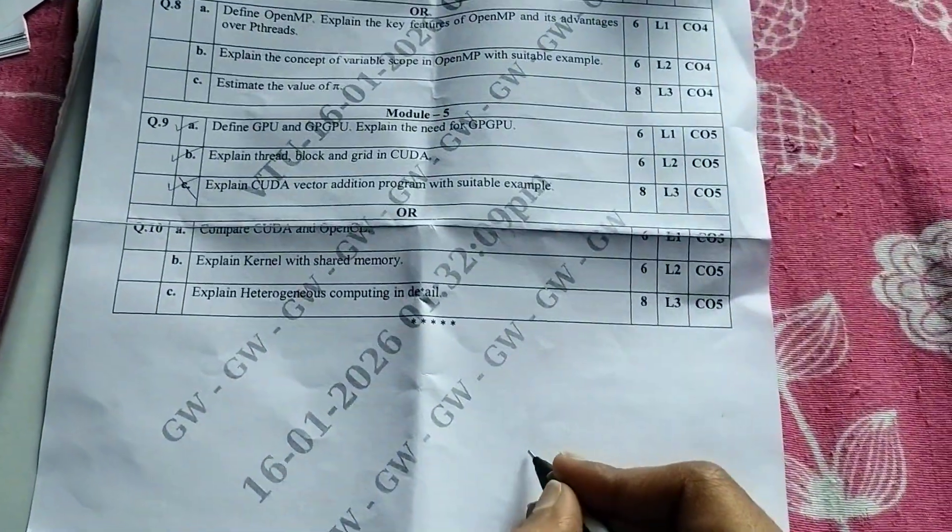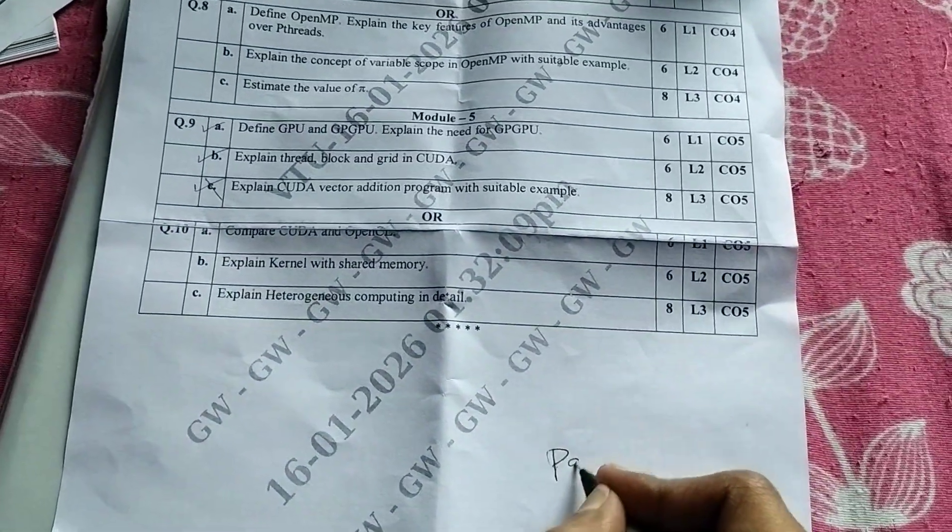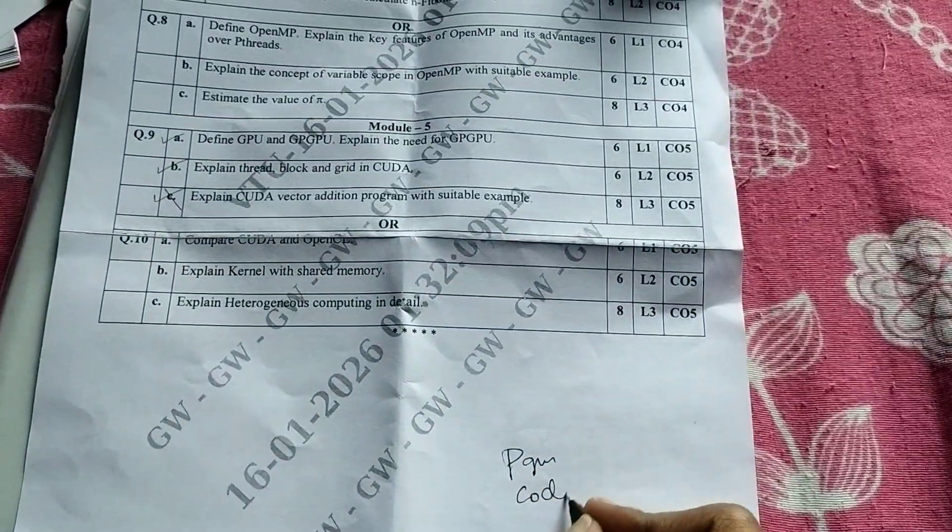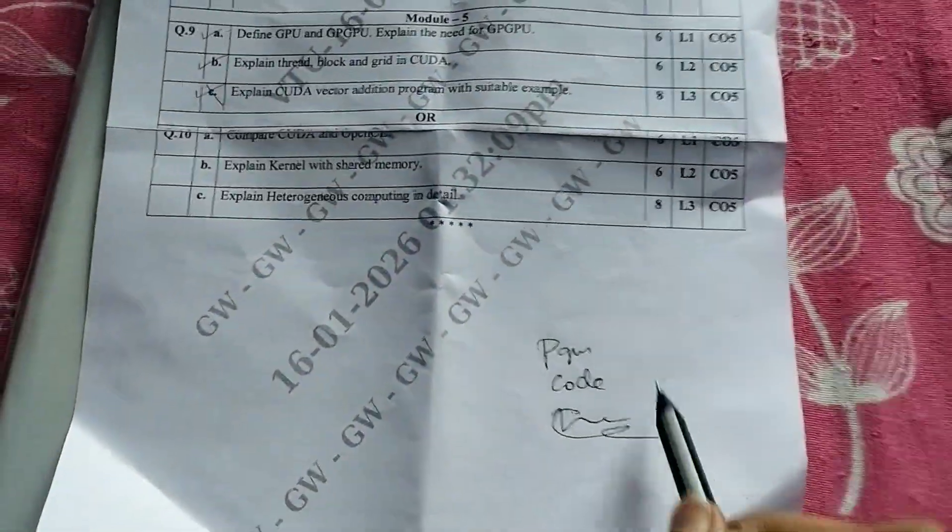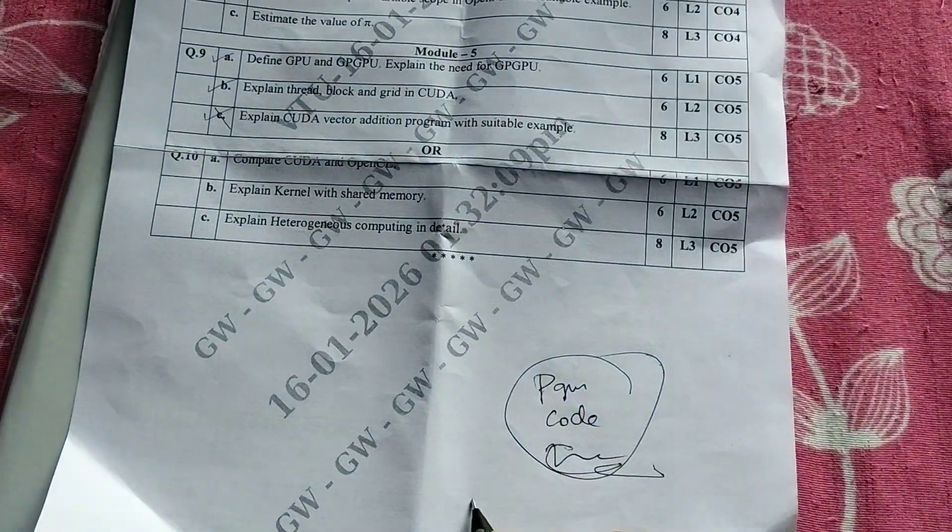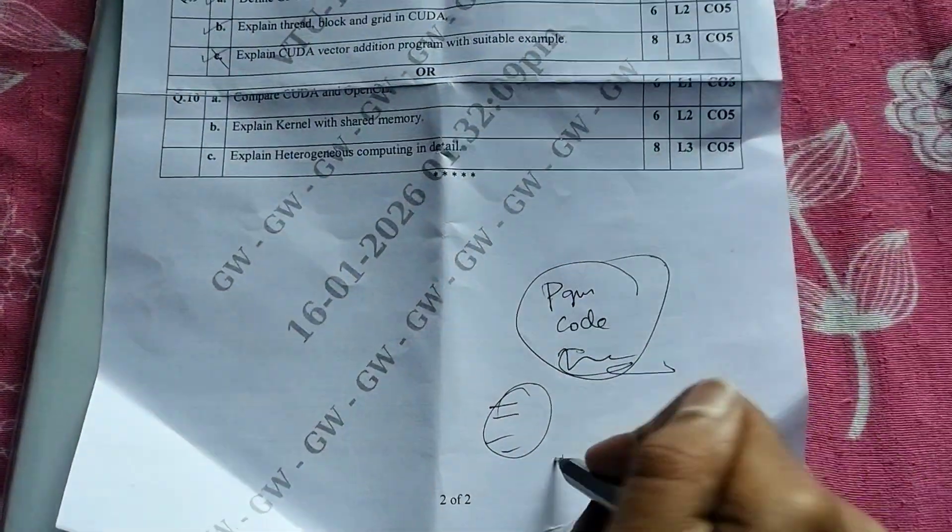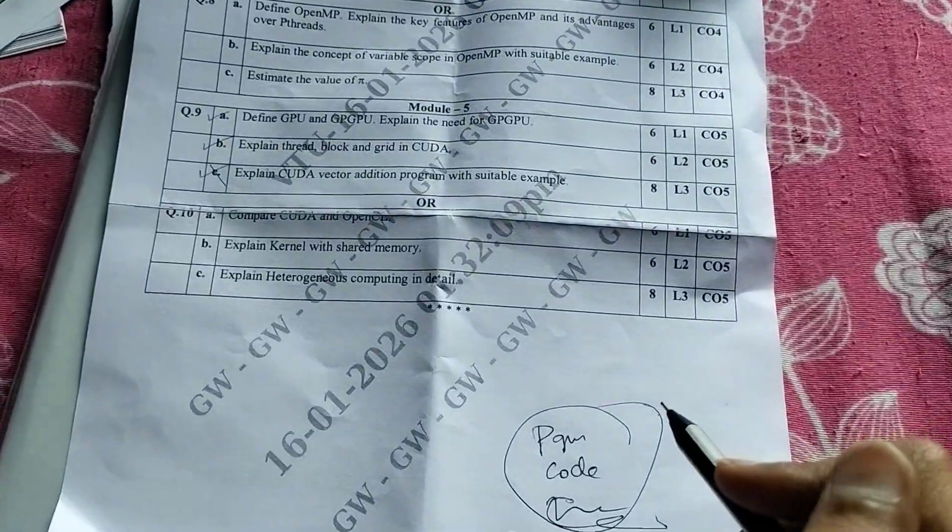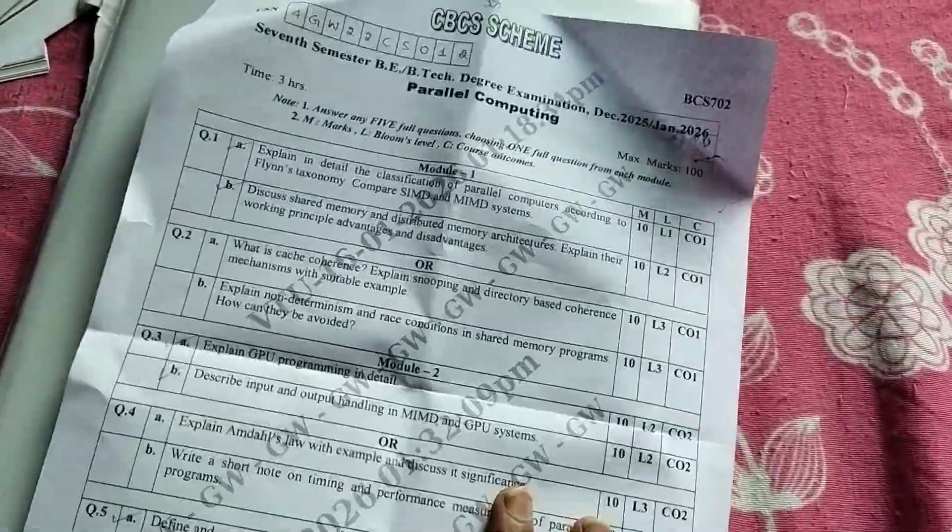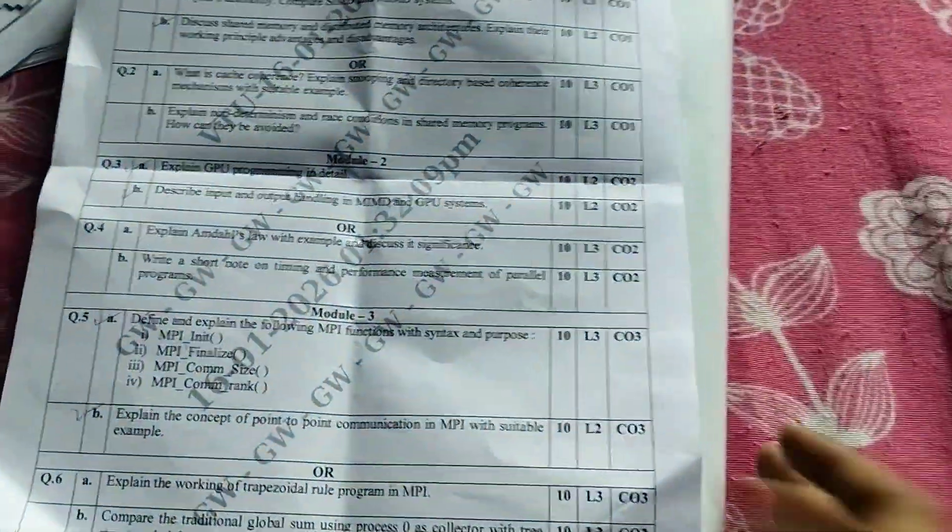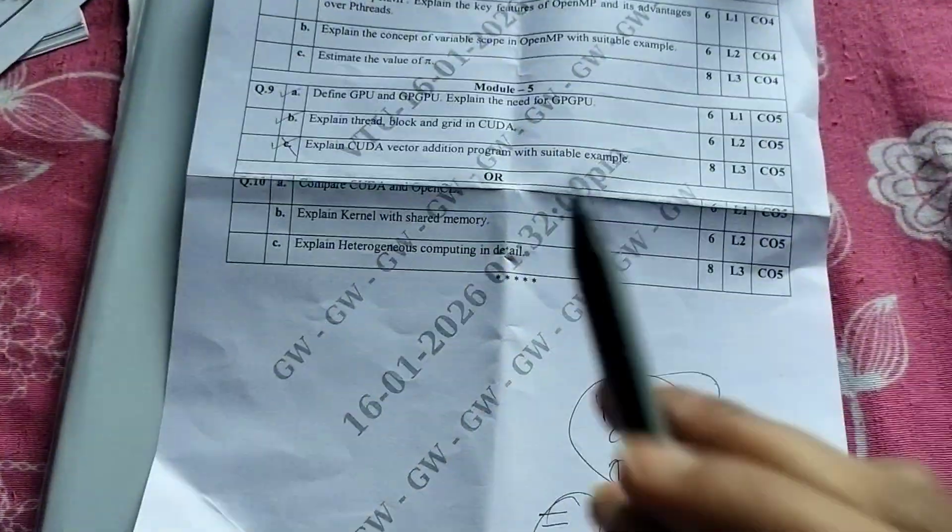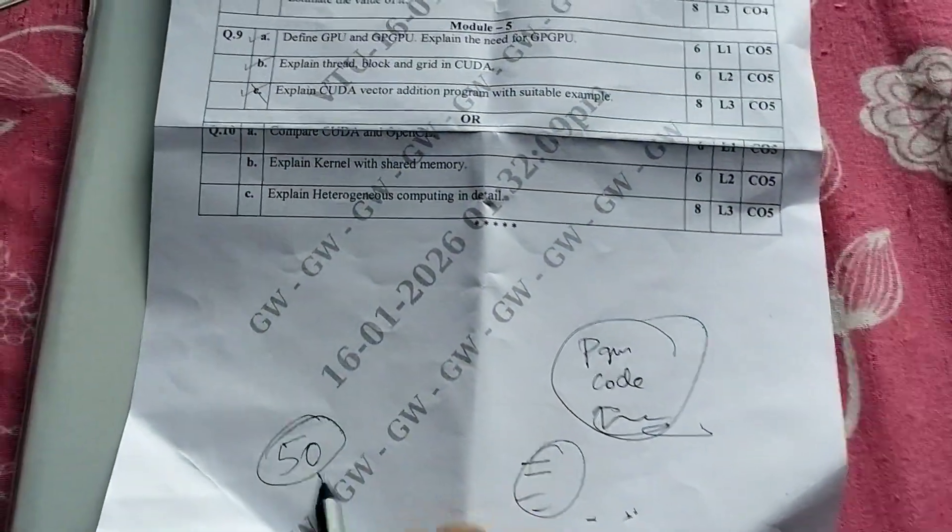We didn't want to learn the programs, the code part, anything difficult. We only learned like three to four questions per module and all of that is here. I was like, pass toh hona chahiye bhai, because the paper is easy to an extent that we can score somewhere up to 50.